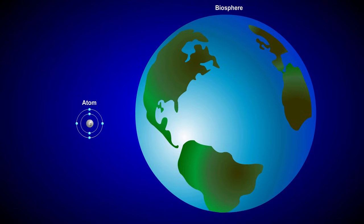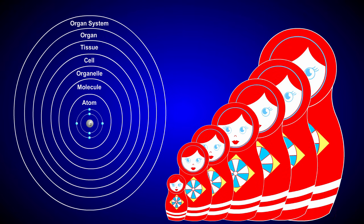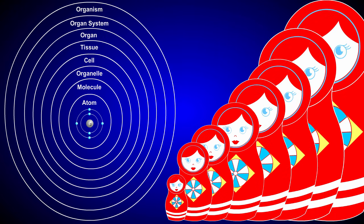Life on Earth is organized into different levels based on degree of complexity. These levels range from the very small and simple, like the atom, to the very large and complex, such as the biosphere. They are organized into a type of hierarchy, with the larger levels enveloping the smaller levels, sort of like Russian nesting dolls.